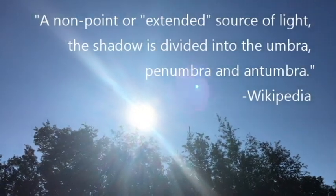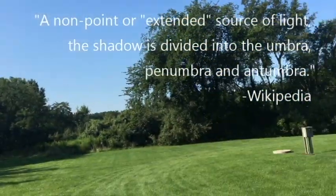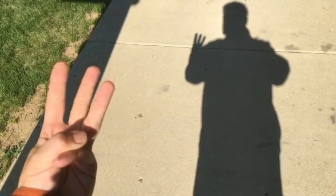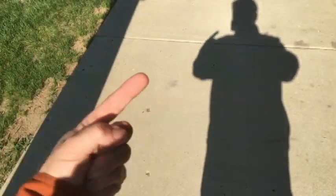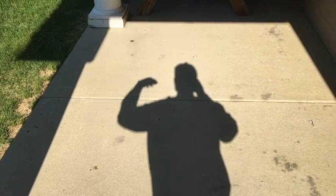For this shadow demonstration I've decided to use the largest non-point light source we have: the sun. I'm going to do this in several parts. Remember, with a non-point light source you have three parts to a shadow: the umbra, the penumbra, and the antumbra. Since I am so close to where my shadow is casting — which I'll refer to as the canvas from now on — and I'm six feet tall with my boots on, the antumbra and penumbra are essentially the same thing.